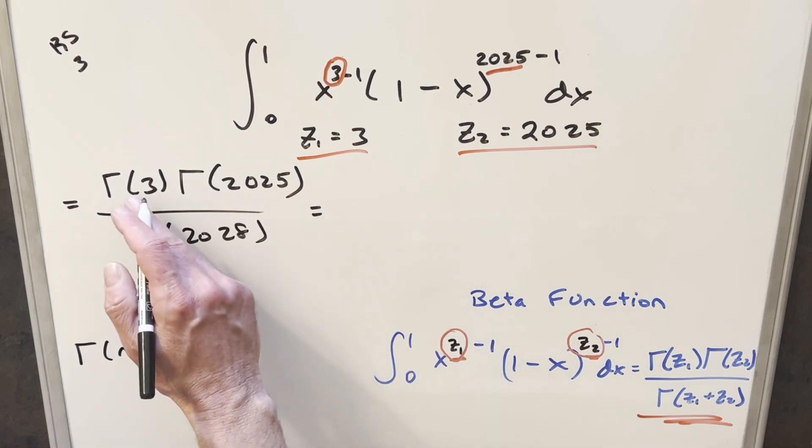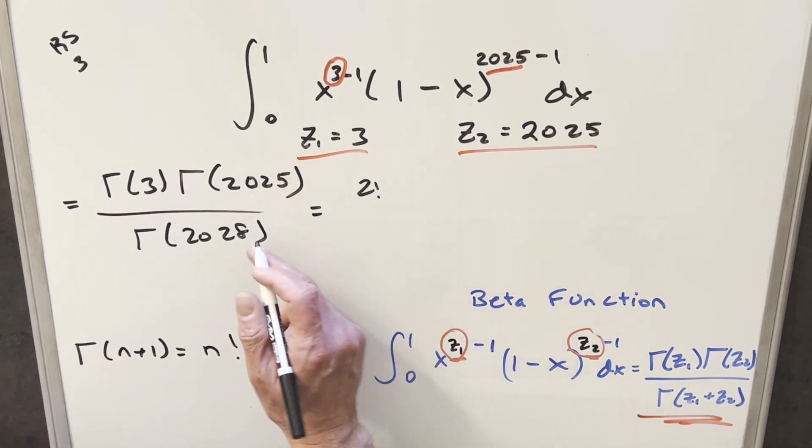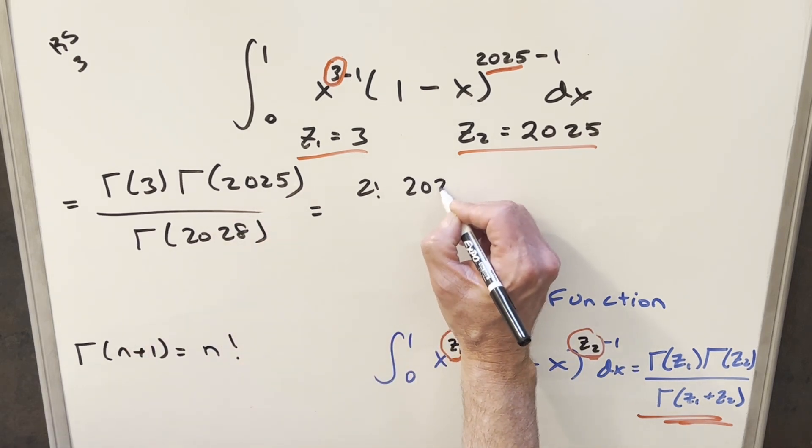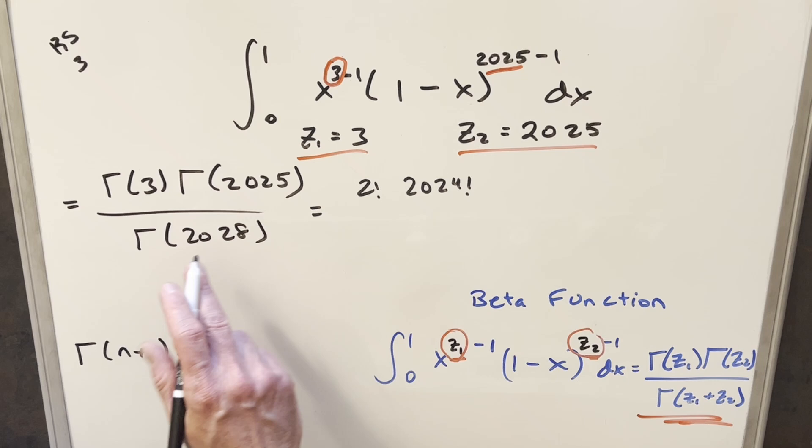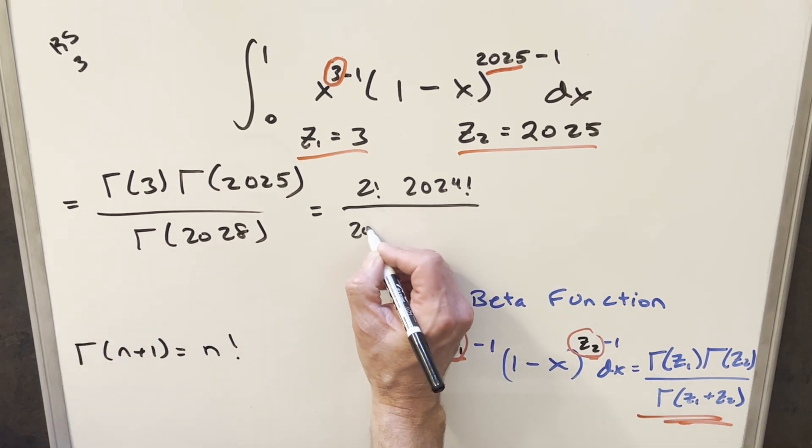So coming over here for gamma of three, using this, we can write gamma of three as two factorial. We can use gamma of 2025. Subtracting one, we can write this as 2024 factorial. And then for gamma of 2028, subtract one, and we're going to get 2027 factorial.